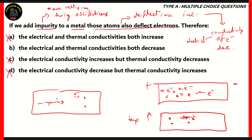Therefore, option D is also incorrect, because it says thermal conductivity increases — whereas adding impurity actually decreases it. The correct option is option B: both electrical and thermal conductivities decrease. Electrical conductivity decreases because the movement of free electrons is impeded by the impurities, and thermal conductivity decreases because impurity atoms impede the oscillations of the metal's atoms, reducing the ability to conduct heat.